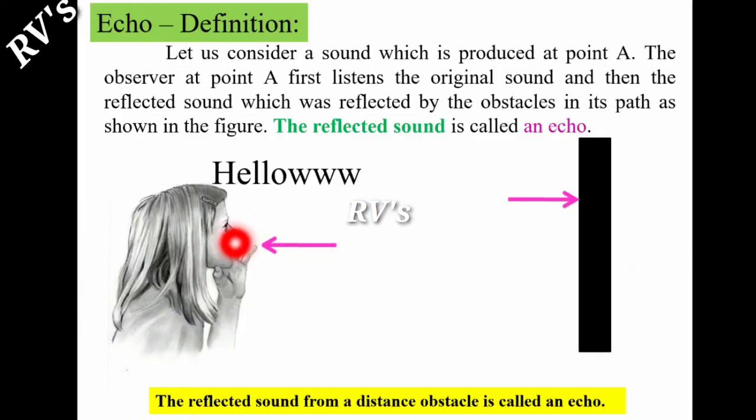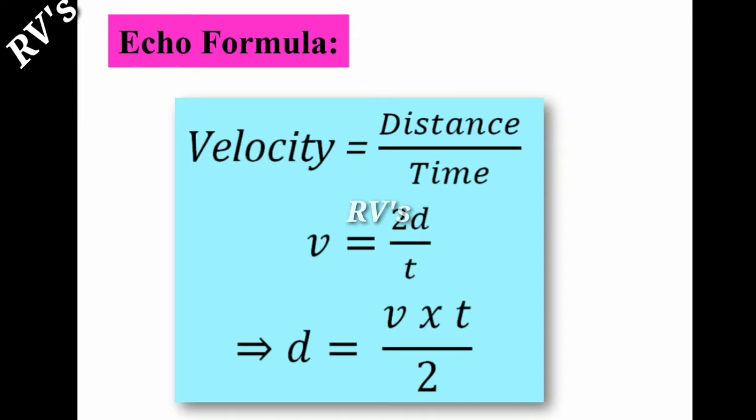The distance between observer and obstacle is d. Sound travels in forward direction and then backward direction, covering a total distance of 2d. Therefore, the distance traveled is 2d. We know the formula: velocity equals distance by time. So v equals 2d by time. That implies d equals v times t by 2. This is the formula for echo.